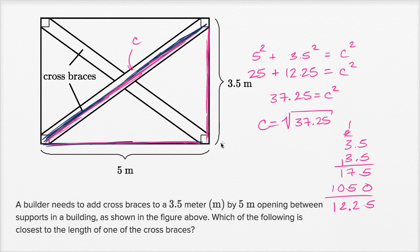Now let's think about what this is. We know that 6 squared equals 36, and we know that 7 squared equals 49. So c squared equals 37.25.